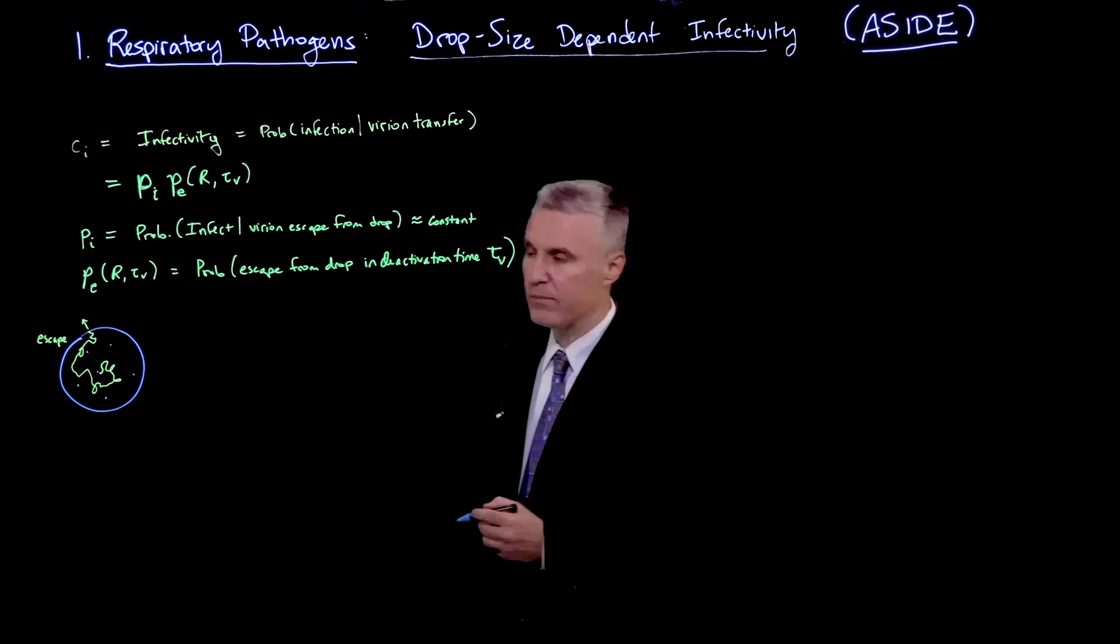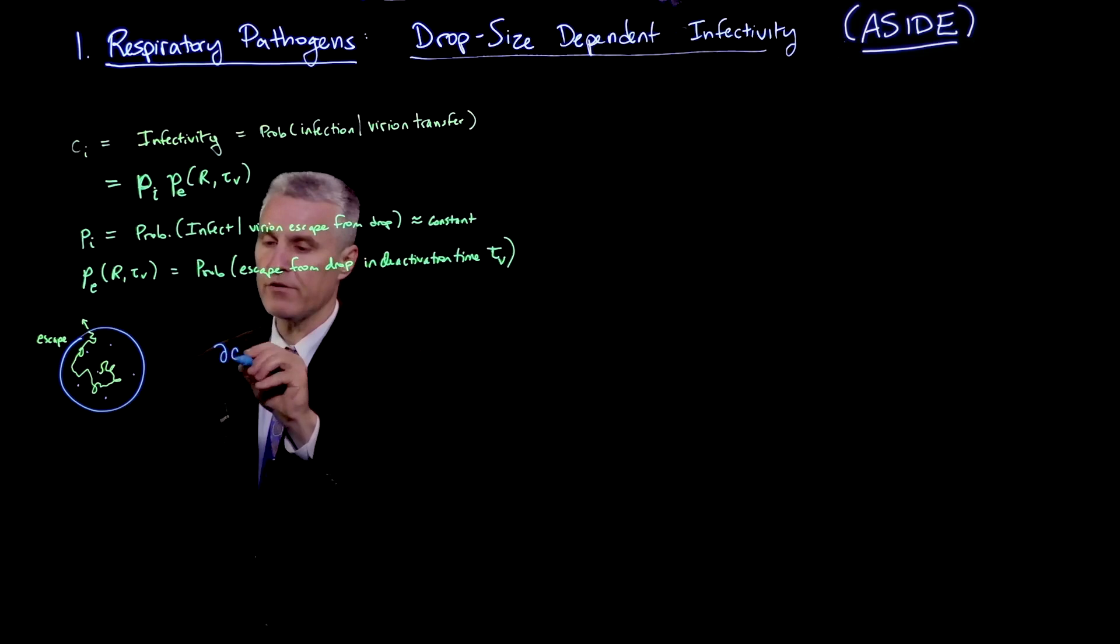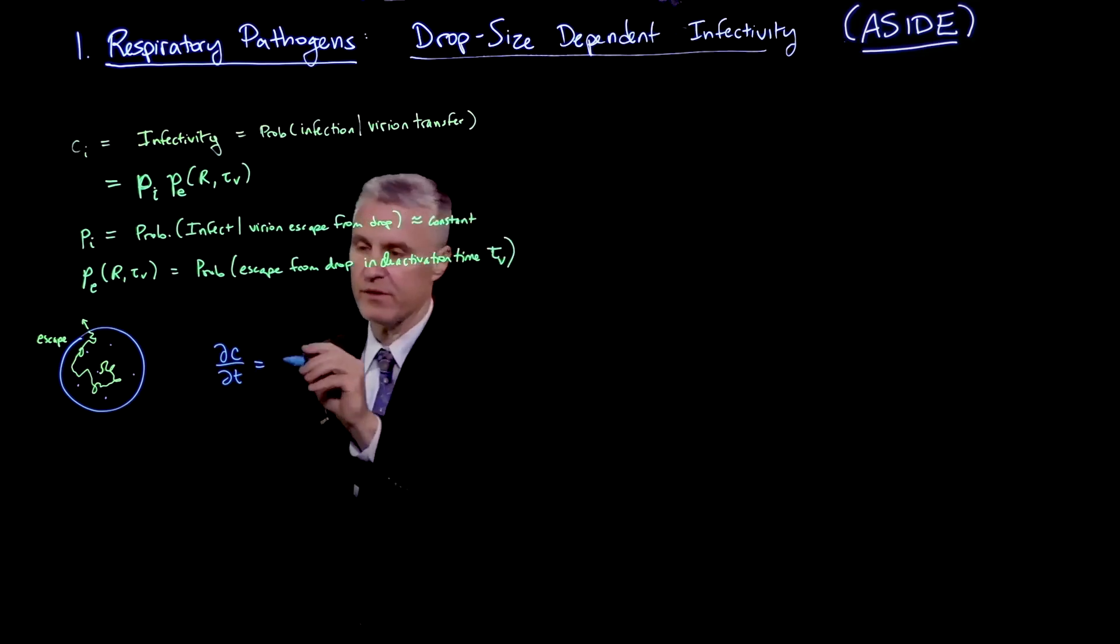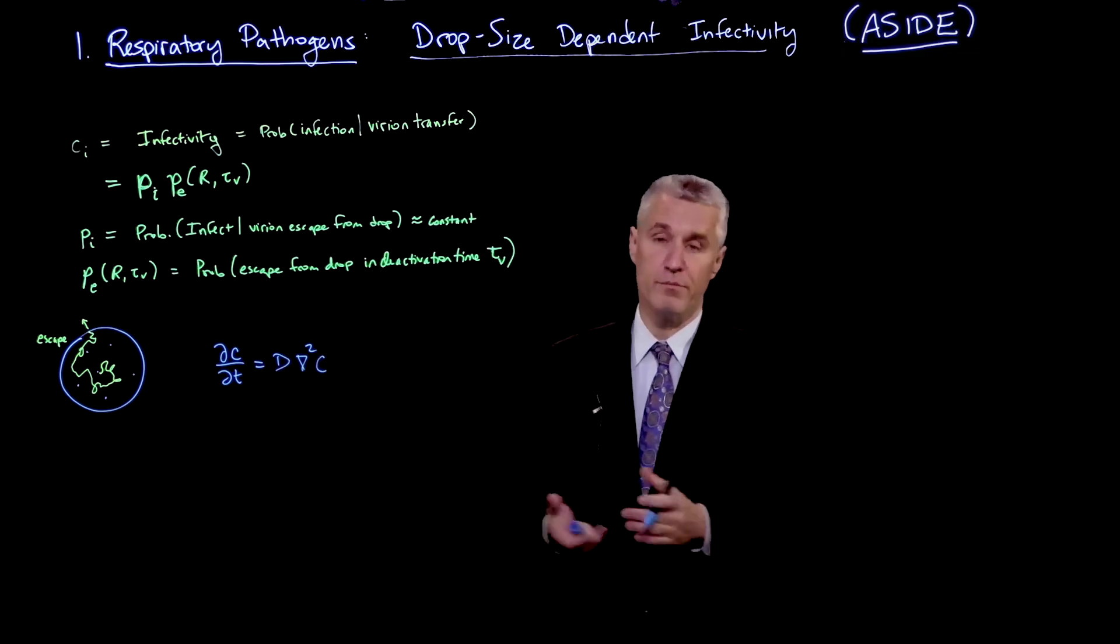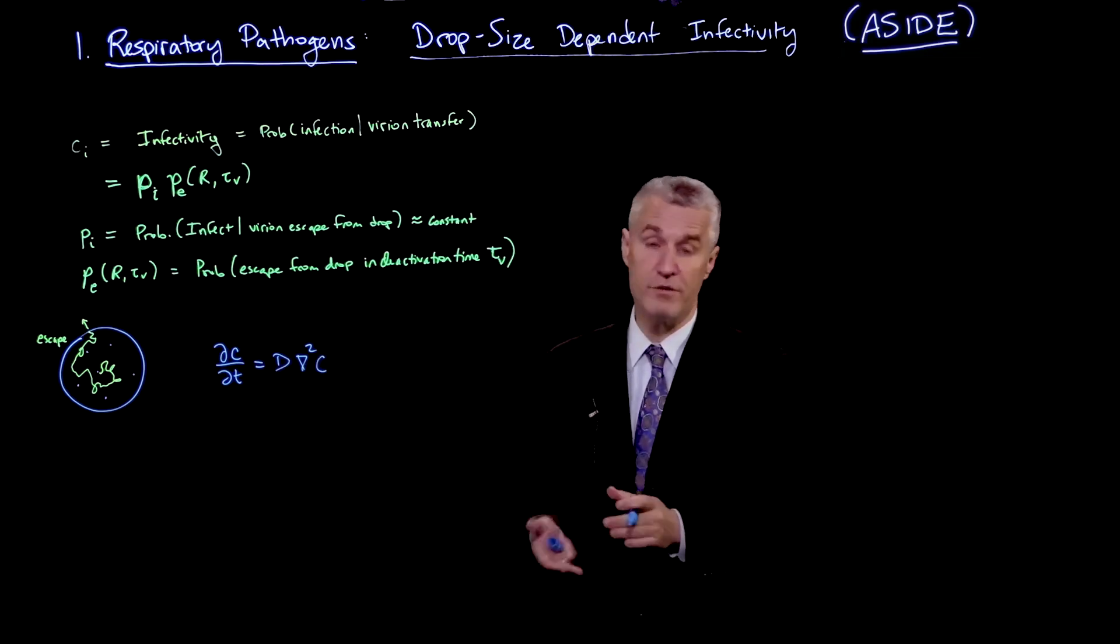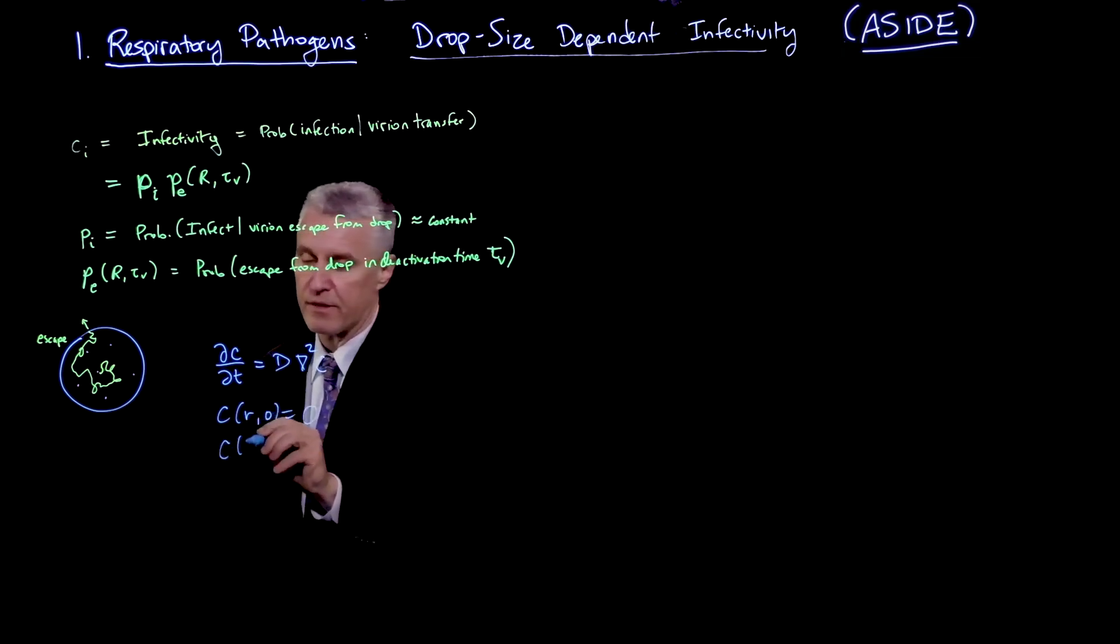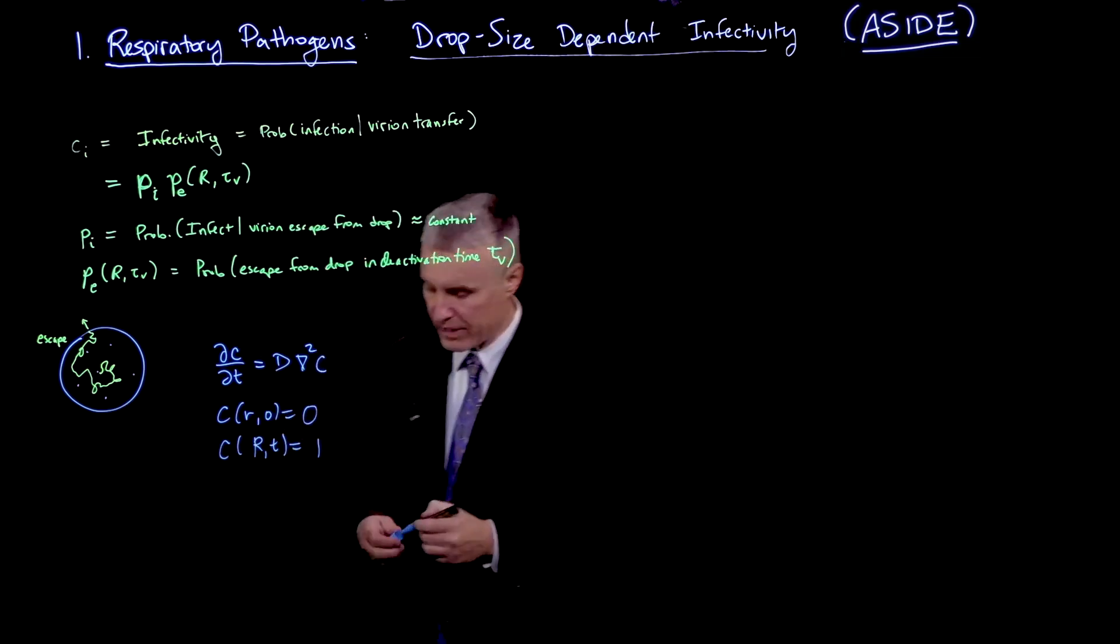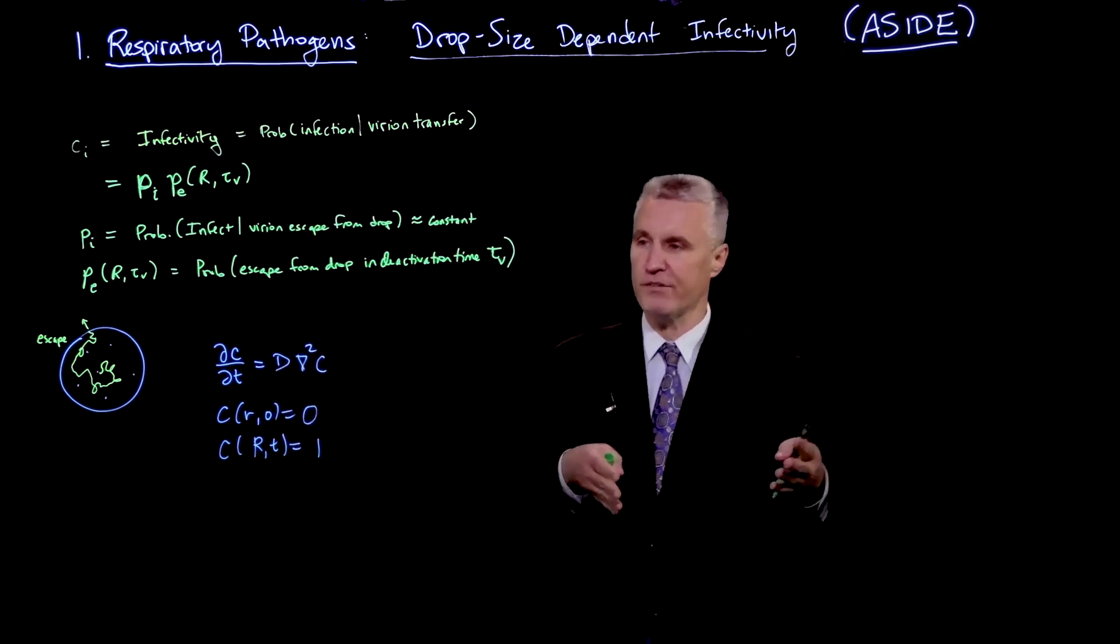To solve this problem, we think of the droplet here, and we want to solve a diffusion problem where c is the concentration of viruses in the domain, D is the diffusivity of the viruses, and this is the partial differential equation in the sphere, which is the diffusion equation. Our boundary conditions are that c(r,0) equals 0, and at r=R it's going to be 1. What we're trying to figure out is c will be the concentration of viruses that has left the system.